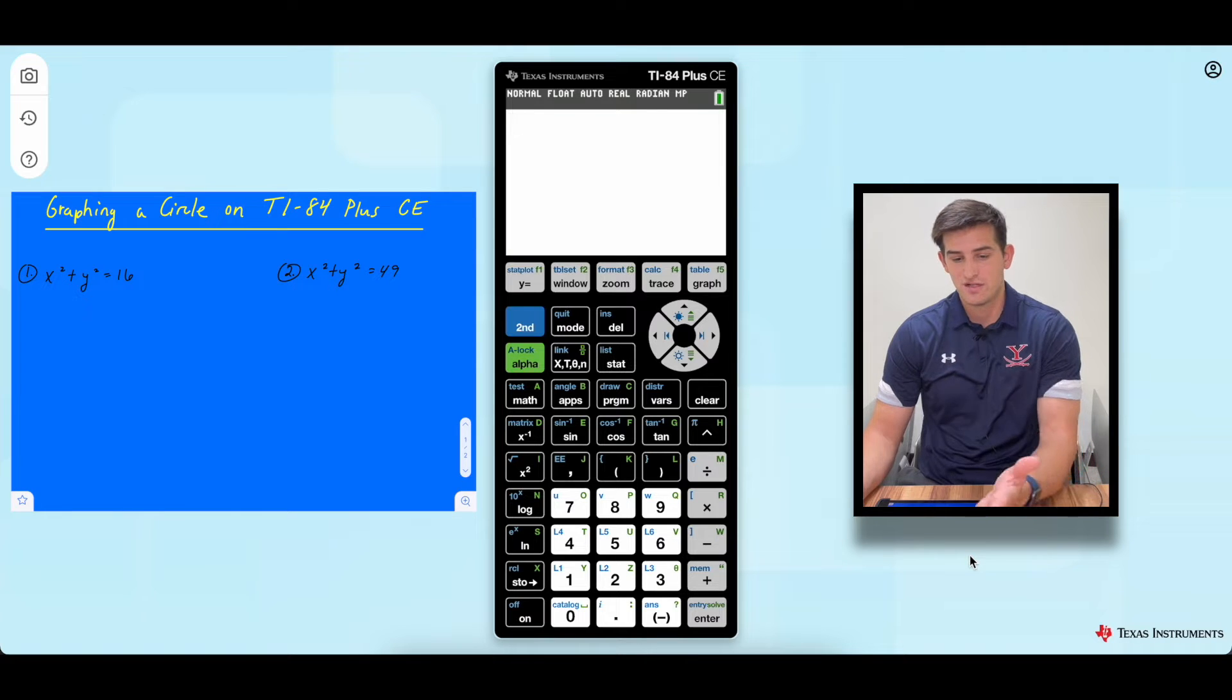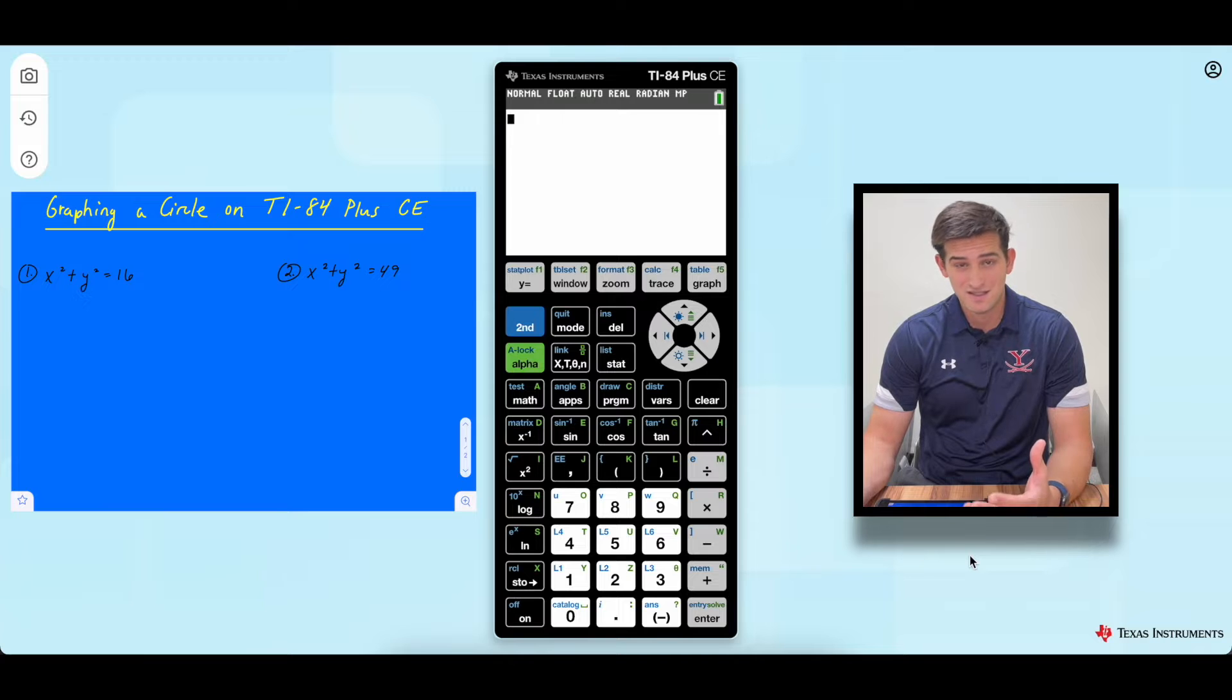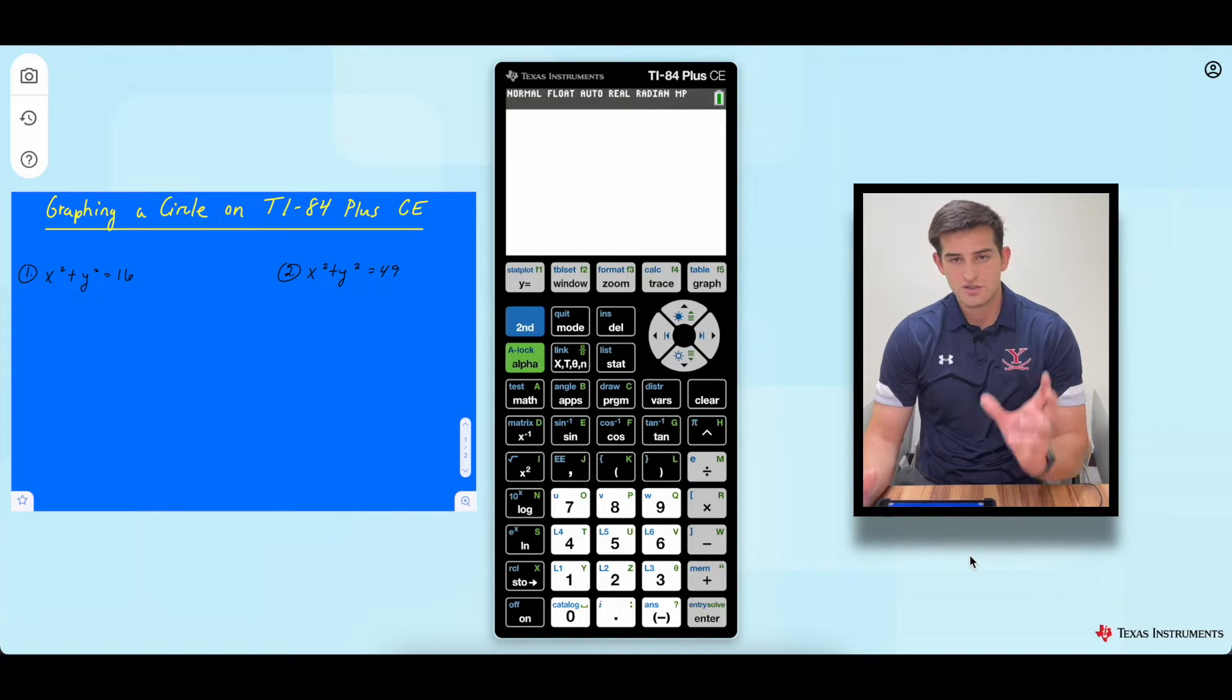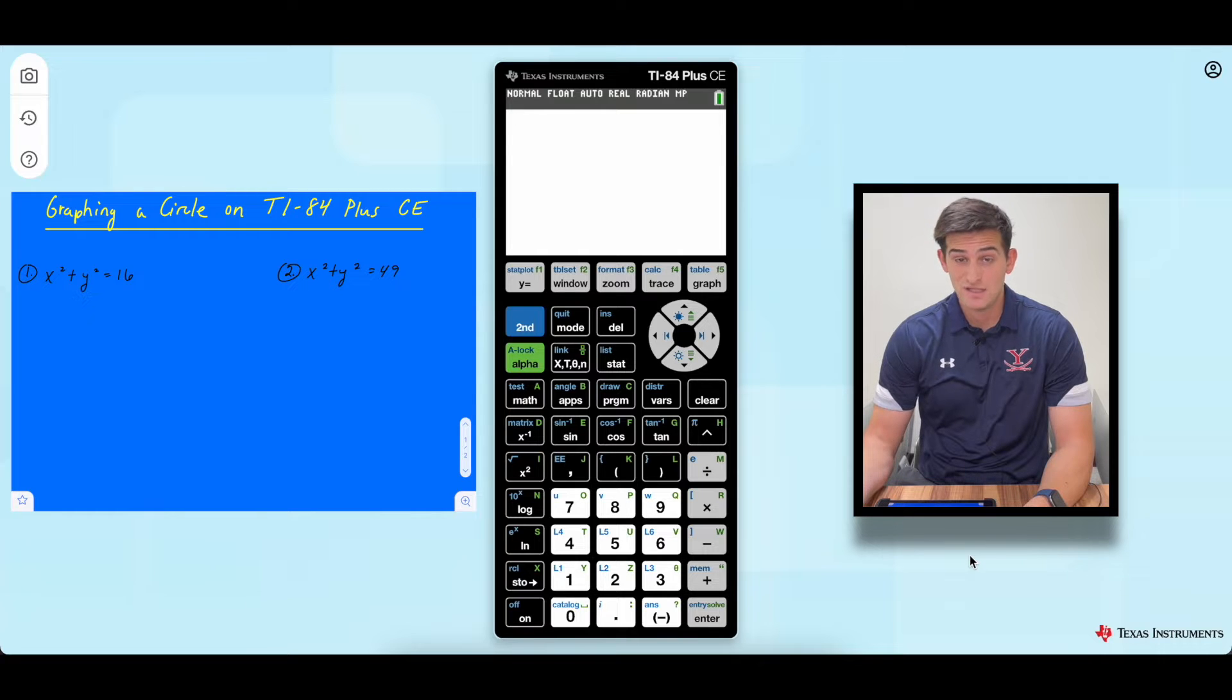So we'll graph two circles on our calculator. And you can also see on the screen that we have the online version of the TI-84 plus CE. And so it should look just exactly like the calculator that you have if you have the TI-84 plus CE. If you have one of the other models that is a TI-84 or 83, it should still work for you.